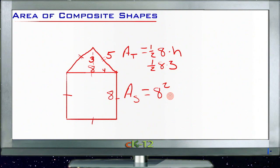And then when we're done, we just add those things together. So half of 8 is 4 times 3, that's 12. And 8 squared is 64.